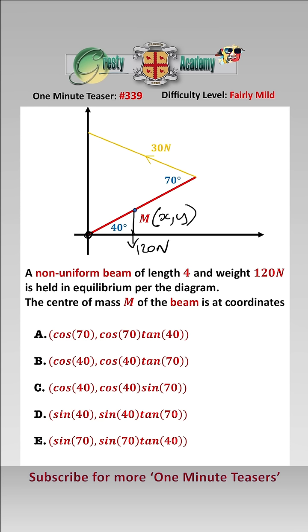Therefore we can take moments about the origin and therefore we have that 120x is equal to... We know that the length of the beam is 4, we are told that, and so therefore that equals 4 sine 70 times 30. Therefore x is equal to sine of 70. Now looking at this little triangle here...